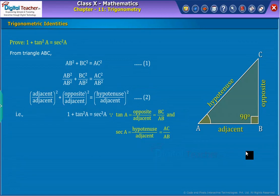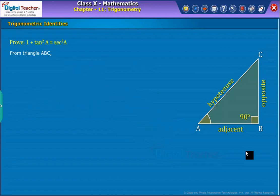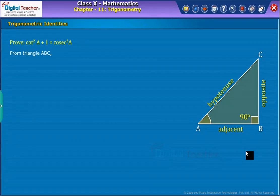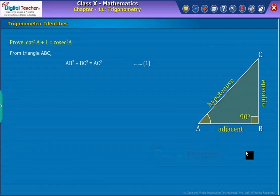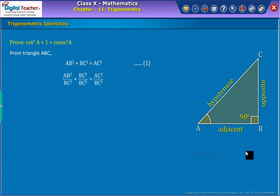Now let us prove one more identity. Proof. Let us consider a triangle ABC with right angle at B. From Pythagoras theorem, we have equation 1. Now divide with BC squared on both sides of equation 1. We get the result as shown on screen.